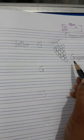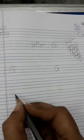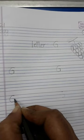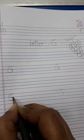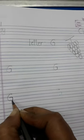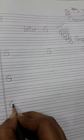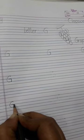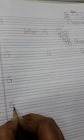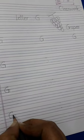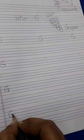G for grapes. Now start writing. Firstly, make a curve like C, then in, out, down. G. G for goat — make a C, then in, out, down. G. G for girl — let's make once more. Make a curve like C, in, out, down.